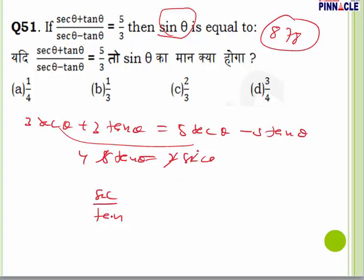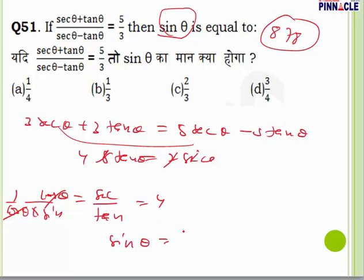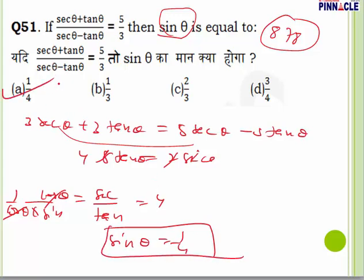Secant theta divided by tangent theta equals four. Since secant is 1/cos and tangent is sin/cos, this simplifies to 1/sin theta equals four, so sine theta equals 1/4. Answer is A. The key message for this question is that when you find such a question, you should cross multiply — it will be easier to find the solution.